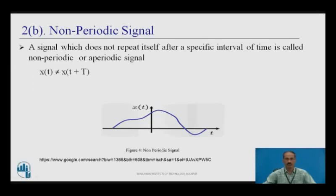Non-periodic signal: a signal which does not repeat itself after a specific interval of time is called a non-periodic signal. It does not satisfy the condition x(t) = x(t + T), meaning x(t) ≠ x(t + T). As you can see in the example, it does not have a definite pattern and does not repeat at regular intervals of time — this is the non-periodic signal in a continuous time system.